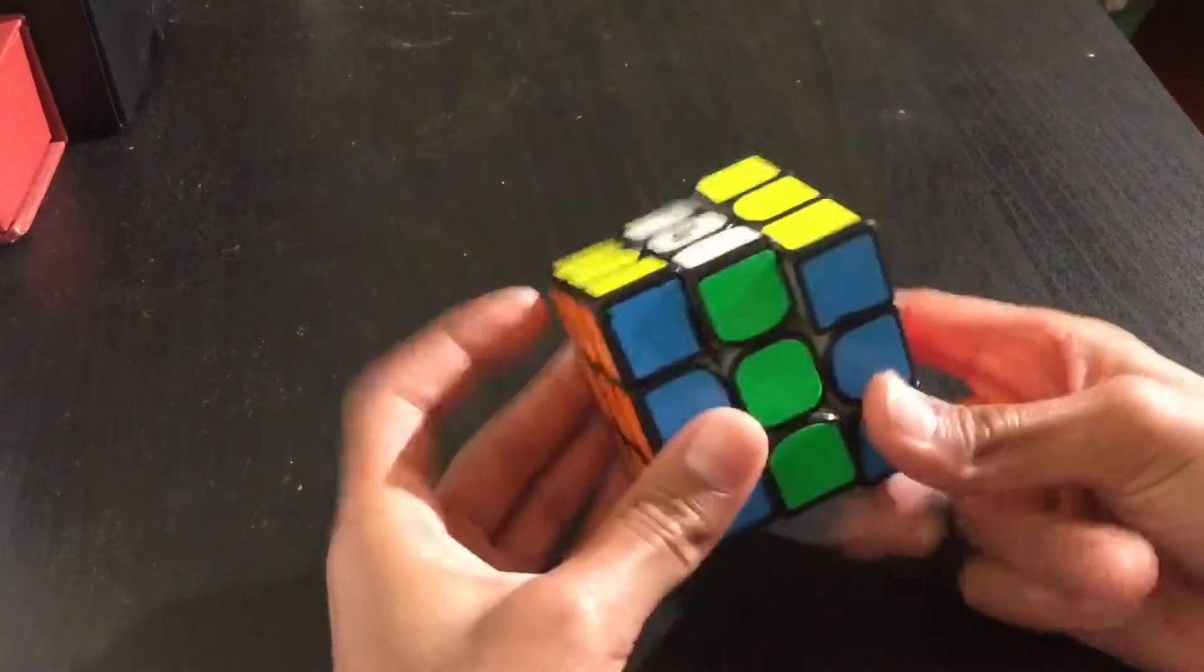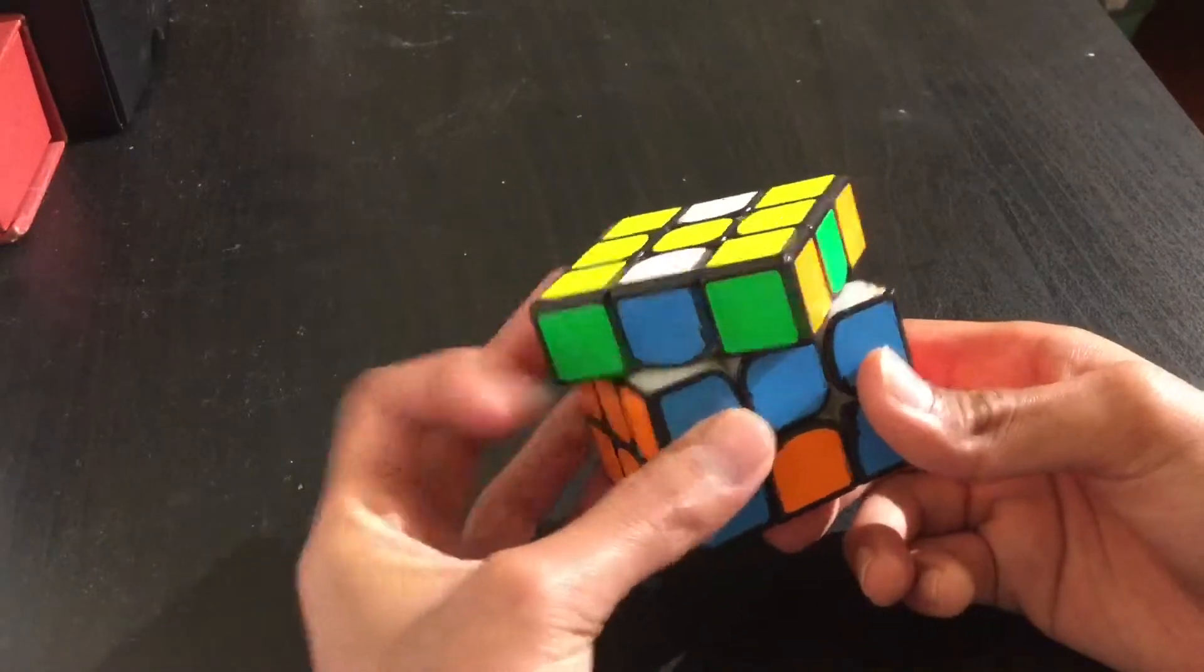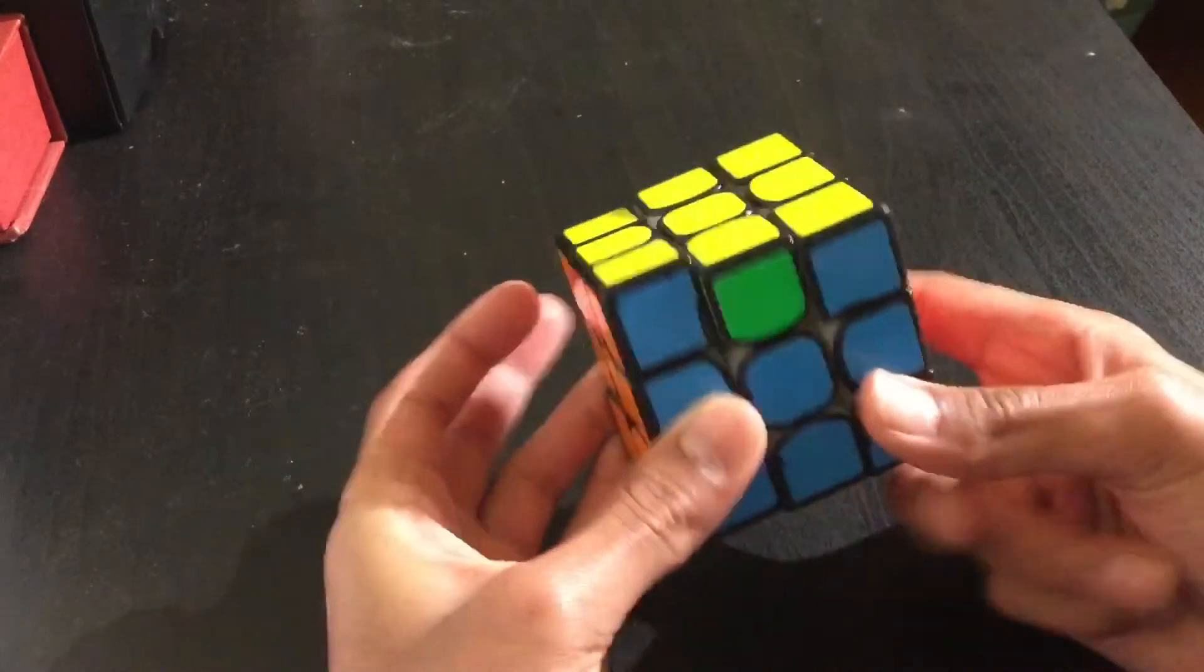I personally like to use the U pull flick for my H-perm, so I go M2 U M2 U2 with the U primes, and then M2 U M2.